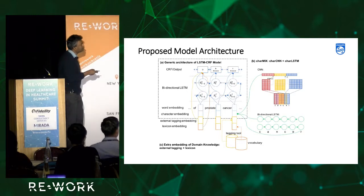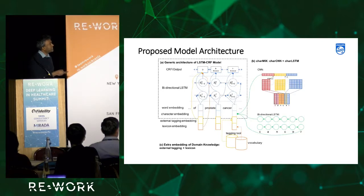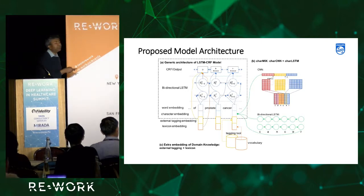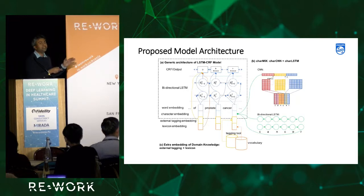As shown in the architecture diagram, two connections are drawn from the domain knowledge embeddings all the way to the end of the network. Both external tagging embeddings and lexicon embeddings are connected not only at the front of the network but also at the end, before classification with conditional random fields. CRFs are good at sequence labeling, so the output will be the best possible sequence of BIO tags indicating whether diseases are captured.